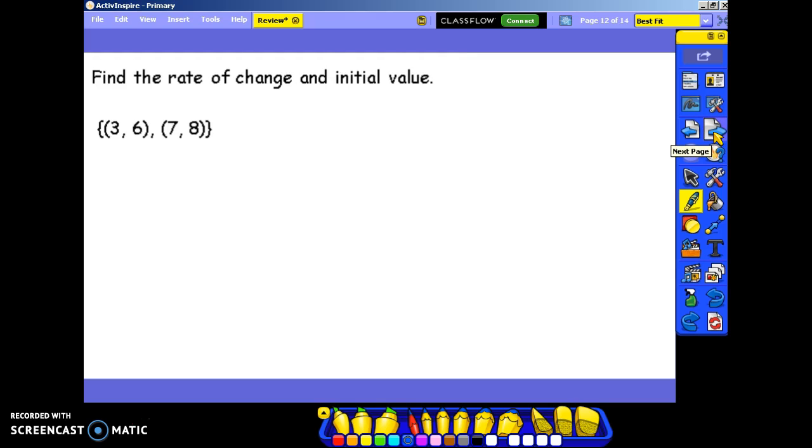Again, we're going to find the rate of change and the initial value. 8 minus 6 over 7 minus 3. 8 minus 6 is 2. 7 minus 3 is 4, which simplifies to 1 half.